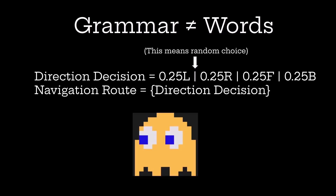The key understanding is that grammar does not have to equal words. Grammar is just a set of rules and a syntax, which means we can make grammars out of almost anything. In this specific case, we made a grammar describing the movement of the orange ghost in Pac-Man. We have a direction decision, and those bars mean a random choice — a random choice between left, right, forward, and back.